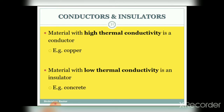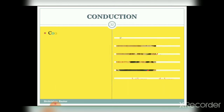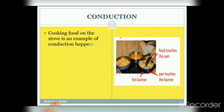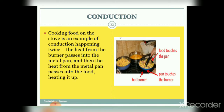Materials with high thermal conductivity are called conductors — for example, copper is a good conductor. Materials with lower thermal conductivity are termed insulators — for example, concrete. Cooking food on the stove is an example of conduction happening twice: the heat from the burner passes into the metal pan, and then the heat from the metal pan passes into the food, heating it up.